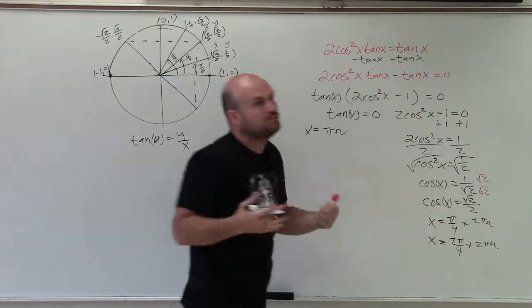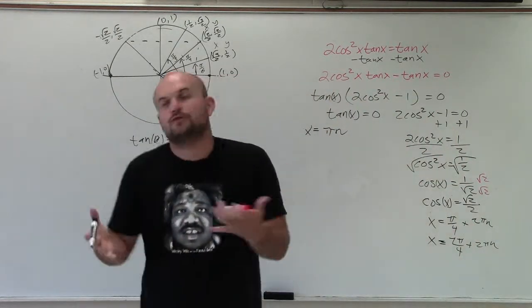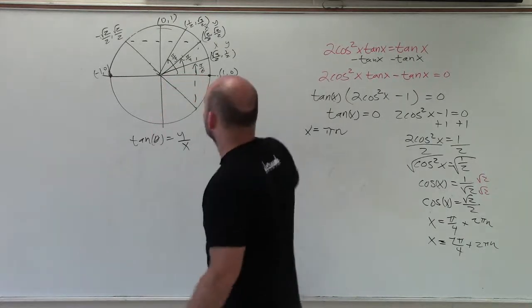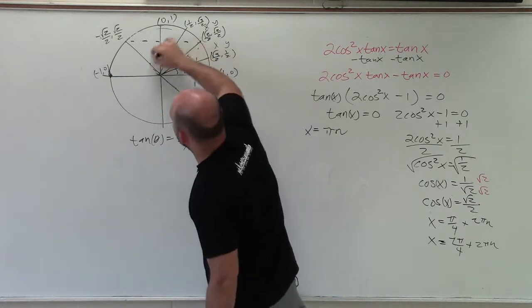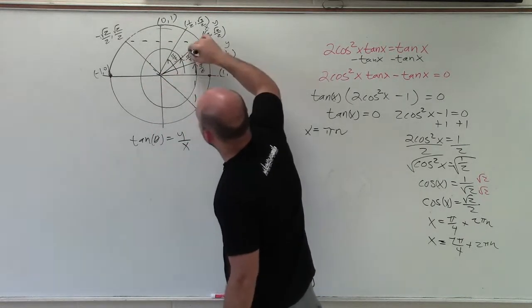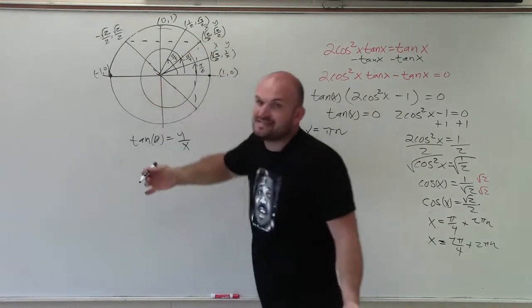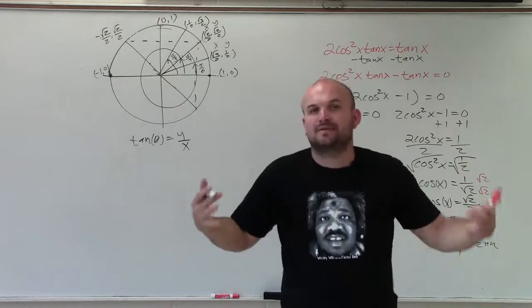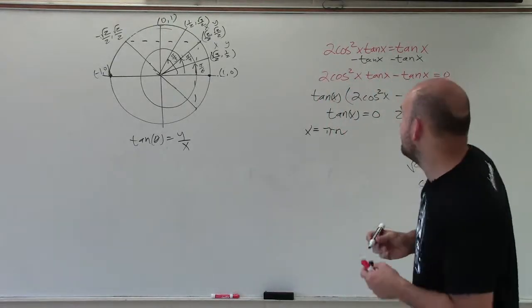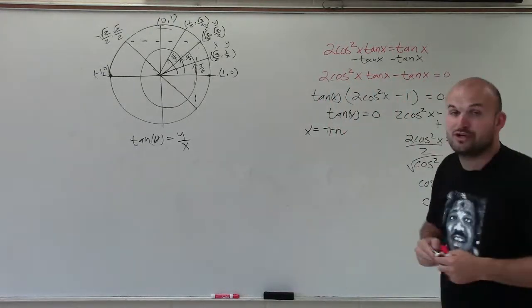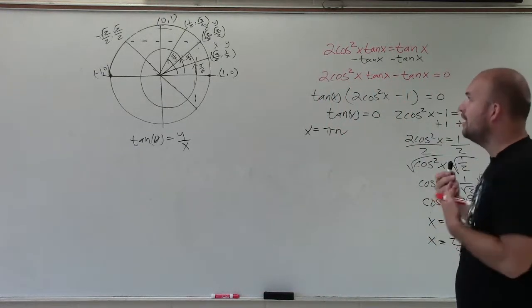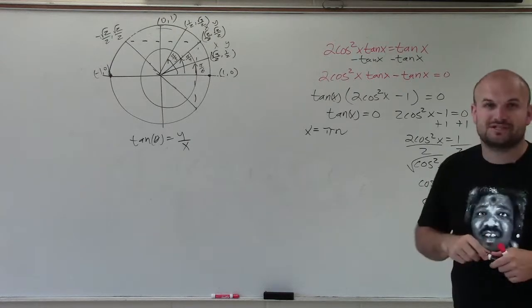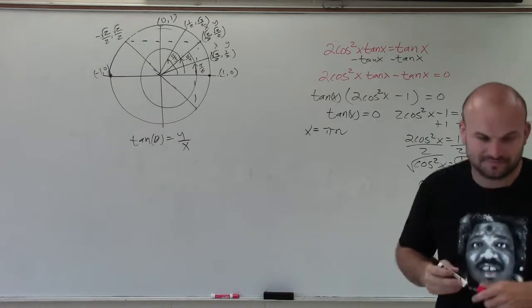Remember, 2 pi is just one full revolution. So pi over 4 plus 2 pi brings you right back to the same angle, which is another solution. And that is how you determine all of the solutions of your trigonometric equation.